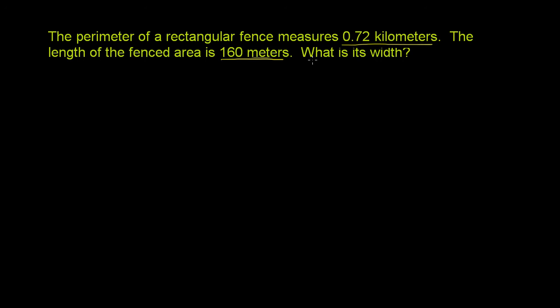They're giving us the perimeter in terms of kilometers, and they're giving us the length in terms of meters. I'm assuming that they want the width in terms of meters, since that's what they're giving us the length in. So what I want to do right from the get-go is just convert the perimeter into meters.